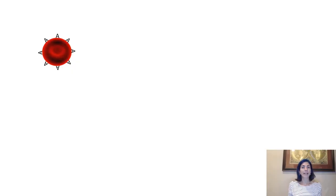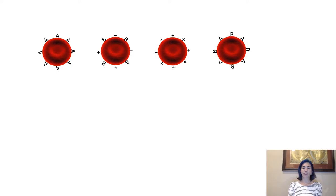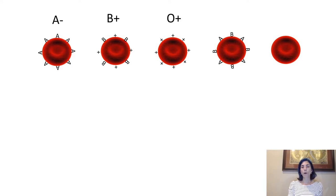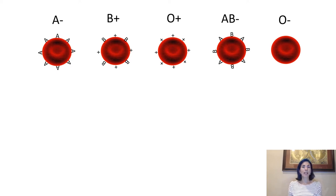Now let's take a look at some of the post-lab questions, starting with how to determine potential donors and recipients for various blood types. Looking at five different blood types based on the antigens shown on the red blood cells, from left to right we have: A negative, B positive, O positive, AB negative, and O negative — which has no antigens presented. The strategy is to first identify what antigens are present on each red blood cell type.